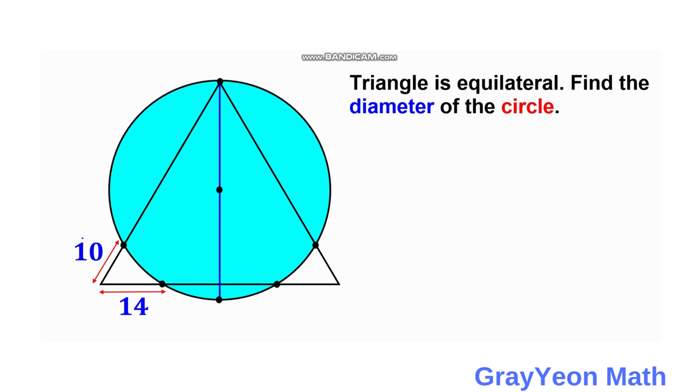So first thing that we have to do is we need to let this length of this segment or side of the equilateral triangle as A and if that is A then this length is actually A minus 10 because you need to deduct the 10 so this is A minus 10 since this triangle is equilateral so all sides are A.